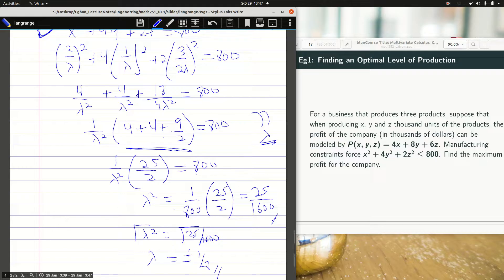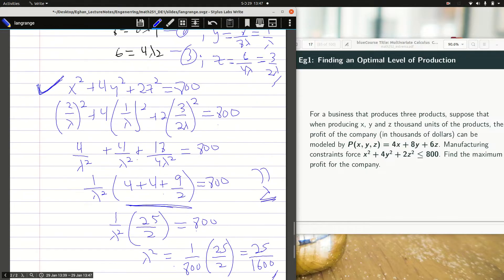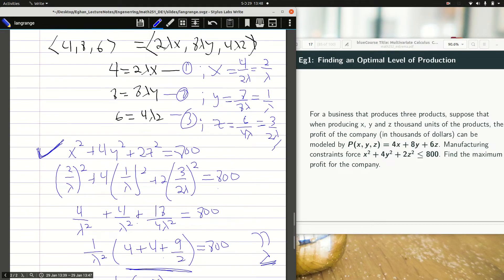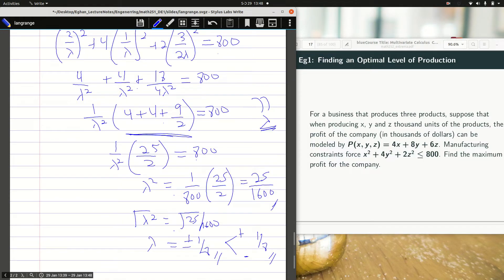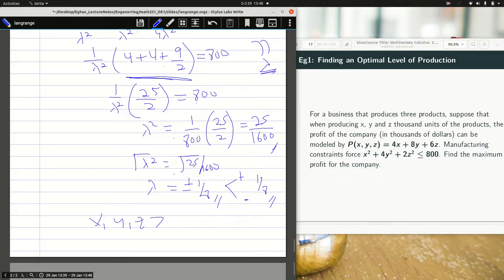So my next question is we have two values for lambda, one is positive the other is negative. Which one do I choose? Don't forget that you would have to substitute them to get the right XYZ. Now because XYZ are products, it means they cannot be negative. We expect to have positive products should be greater than zero. Hence I'm going to choose when lambda is positive, 1 over 8.